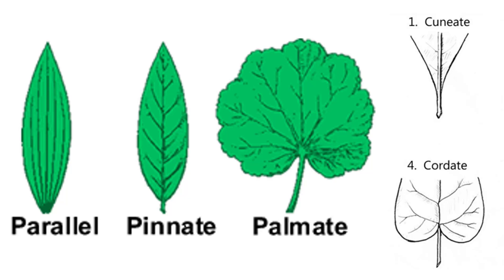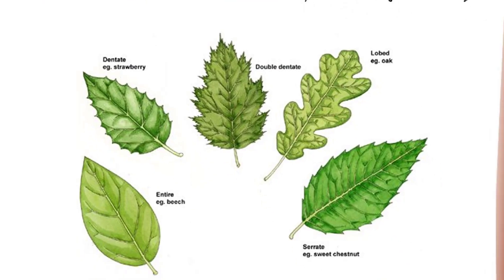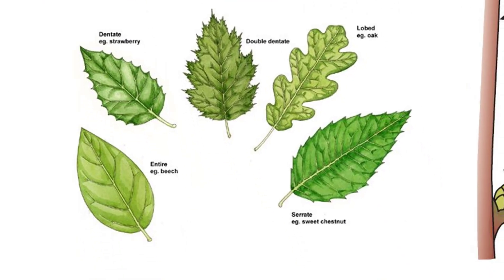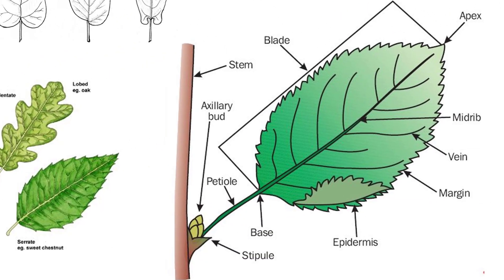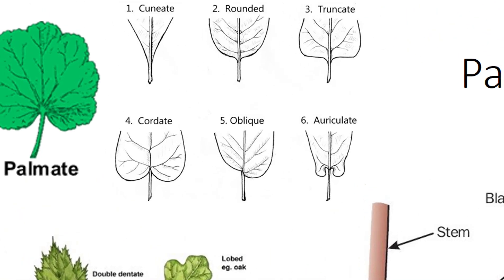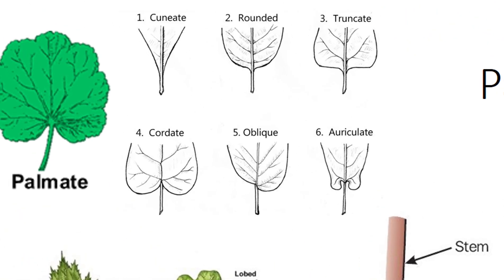Monocot plants have only parallel venation. The leaf margin is the outer edge of the leaf blade, which can be lobed, smooth, toothed, or various combinations of the three. The leaf apex is the tip of the leaf blade, which can be pointed, rounded, or a variety of other shapes. The leaf base is the bottom of the leaf blade, which can be rounded, pointed, or a variety of other shapes.